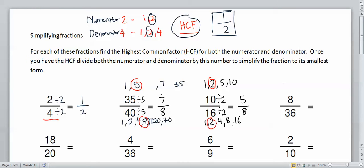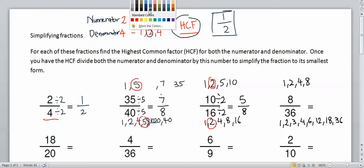We'll do one more. For eight over 36, we've got one, two, four, and eight are the factors of eight. For 36, we have one, two, three, four, six, twelve, eighteen, and thirty-six. What's the highest common factor? The highest common factor is four.